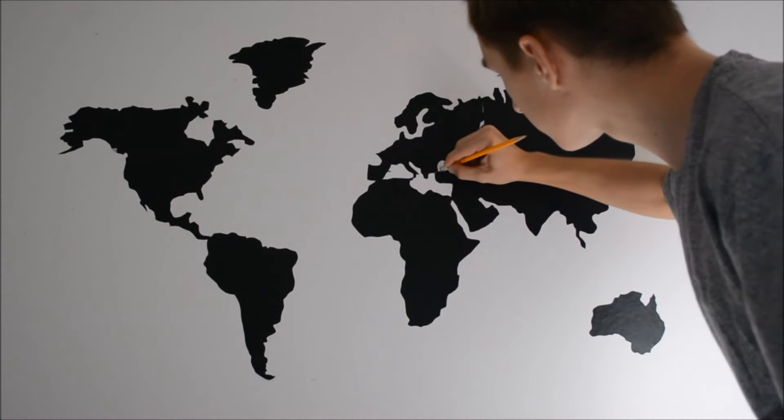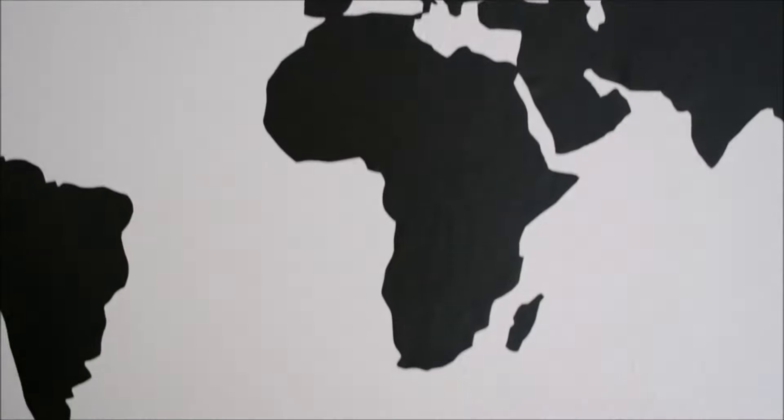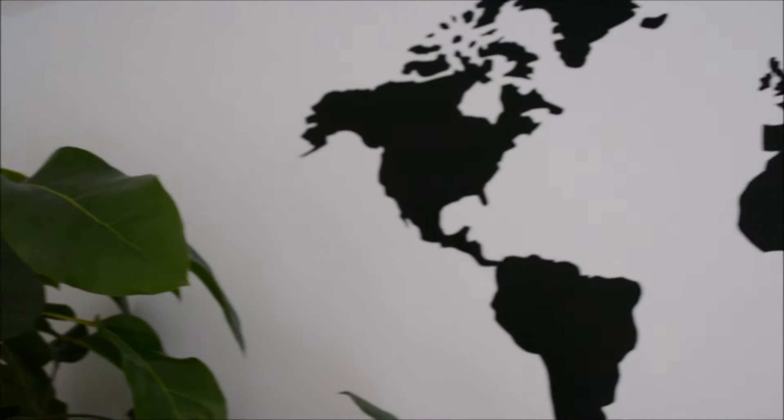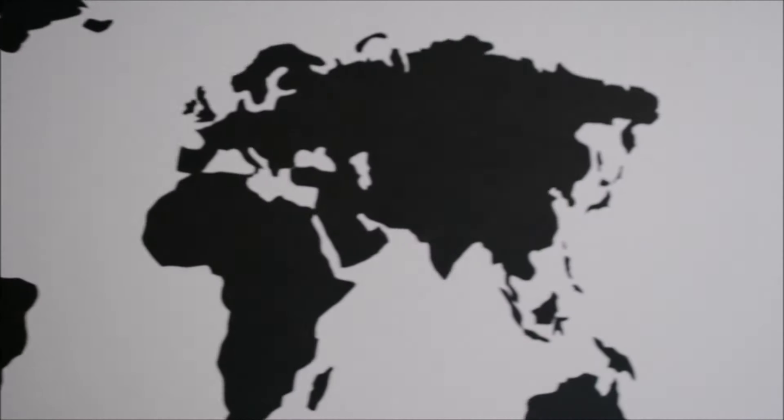When all your countries are on, erase any visible pencil markings on your wall and you're done. You can write on each country where you have been or you want to go with just some chalk, or you can leave it be as it is.